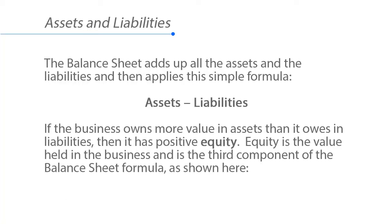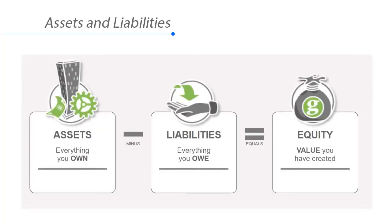The balance sheet adds up all the assets and the liabilities and then applies this simple formula: assets minus liabilities. Assets are everything you own, minus liabilities — everything that you owe — equals equity, the value you've created.